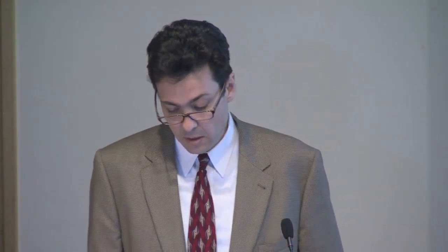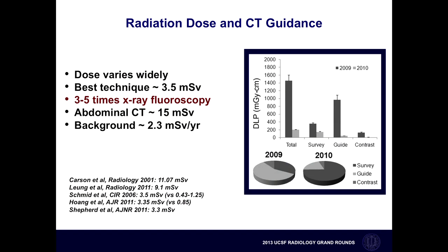Between those two years, when we adjusted the dose specifically in the fiducial and guide phases during needle placement, we were actually able to reduce our dose by 80 to 90 percent just by simple changes in CT dose parameters. Across the literature, the dose varies a lot largely because of different techniques over time. With the best current techniques, the average dose in the lumbar spine is about 3.5 millisieverts. Compare that to an abdominal CT, where the dose is around 15 millisieverts.